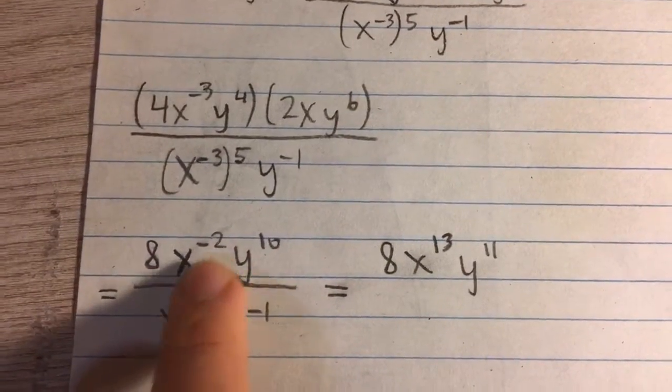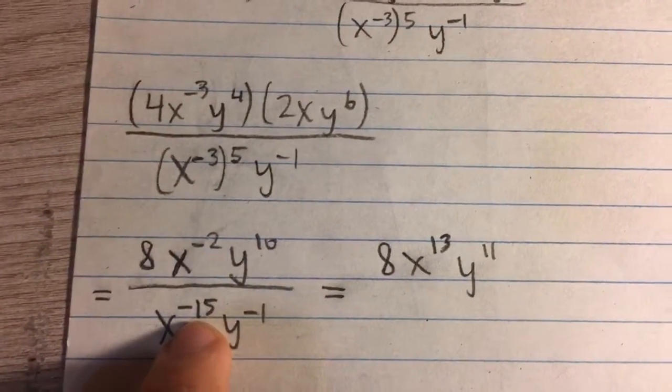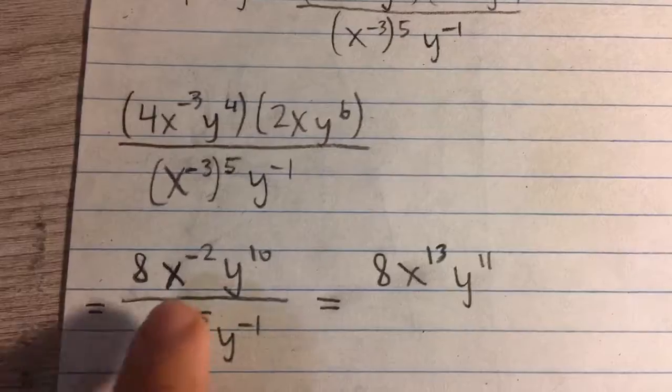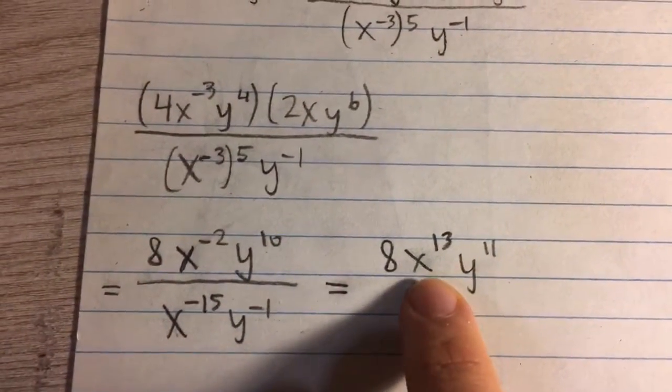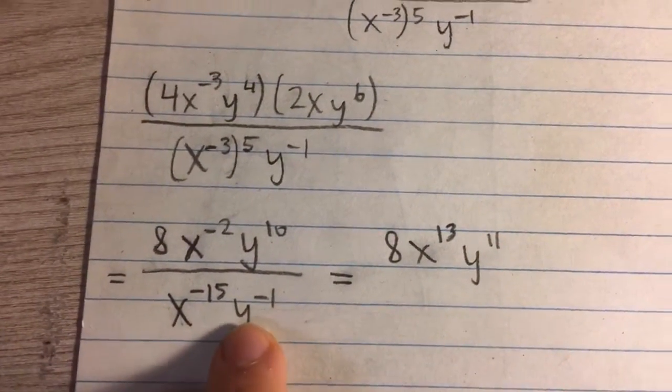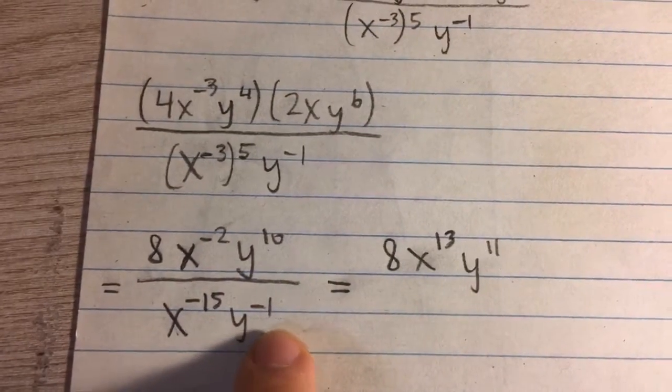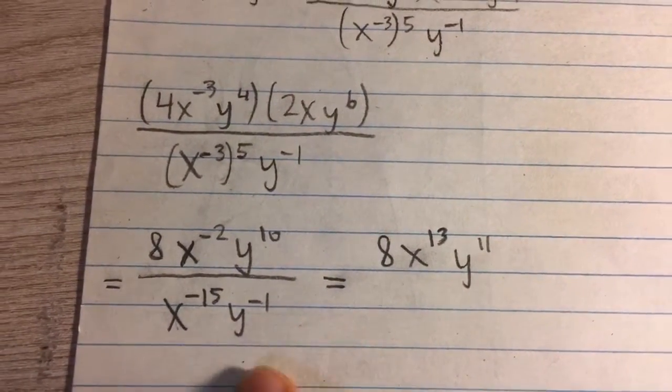So I get x to the negative 2 minus negative 15, in other words negative 2 plus 15, which is 13. And then here, same thing, we have 10 minus negative 1, in other words 10 plus 1.